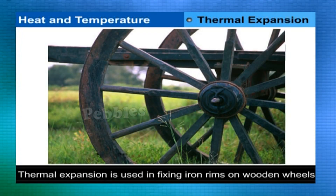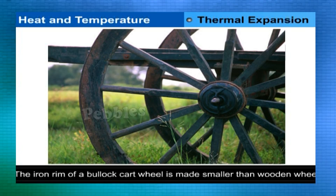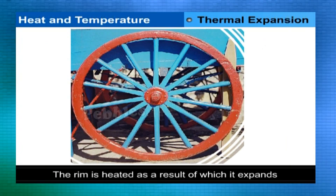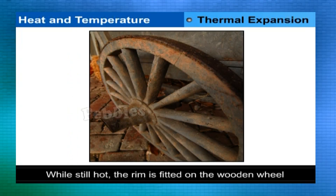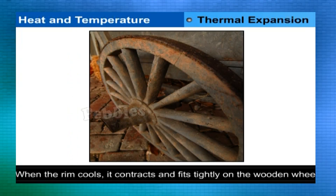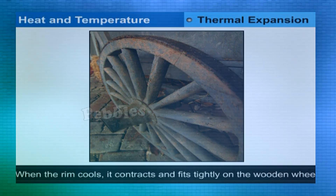In fixing iron rims on wooden wheels, the iron rim of a bullock cart wheel is made slightly smaller than the wooden wheel. The rim is heated, as a result of which it expands. While still hot, the rim is fitted on the wooden wheel. When the rim cools, it contracts and fits tightly on the wooden wheel.